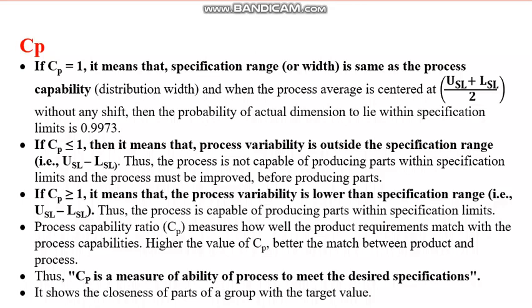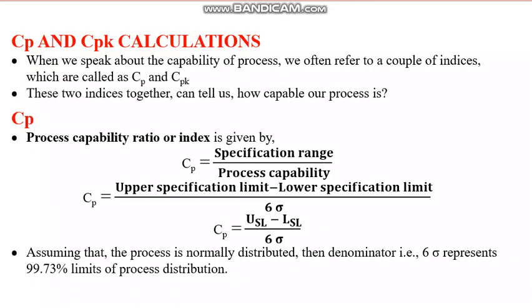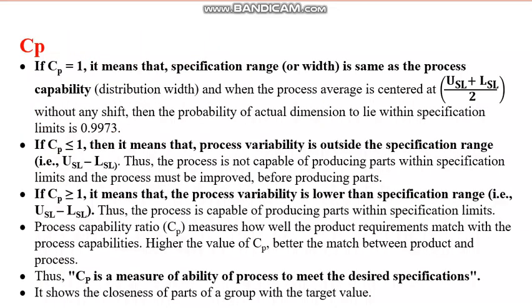If CP is less than 1, that means the process variability is outside the specification limits — the process width is larger and the specification width is shorter, meaning you are not able to produce within the specification limits. This condition is undesirable; CP less than 1 means your process is not capable.